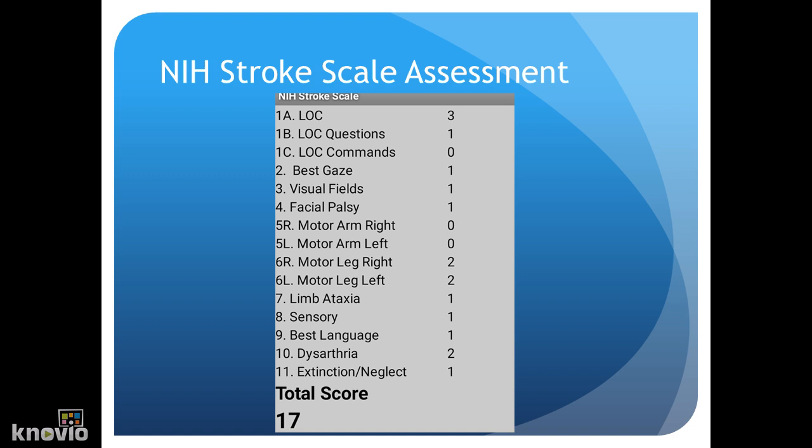For section 6, we're going to do the same thing with the legs, but this time they'll only have to hold for 5 seconds. Section 7 is testing limb ataxia. We'll ask the patient to take their right leg and run their heel down their left shin. If they're able to do this, that means they don't have ataxia, so they'll get zero points.